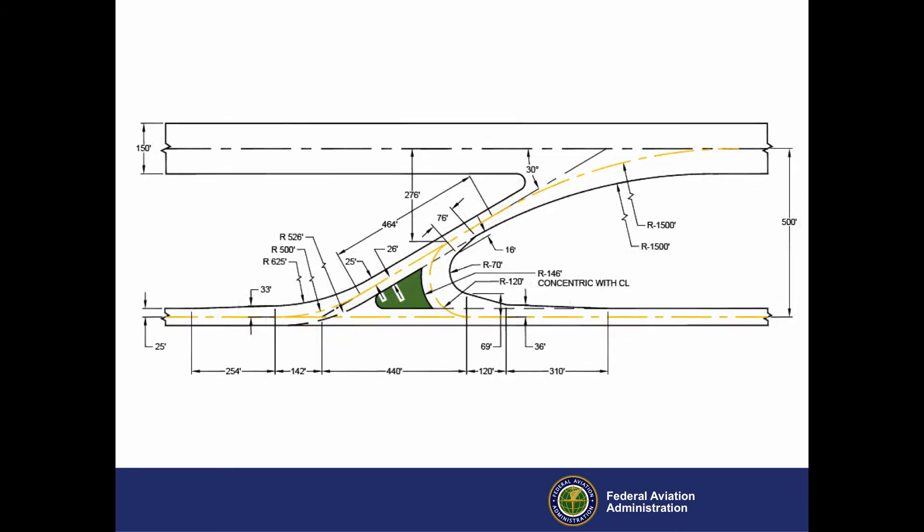Finally, if the airplane design group is ADG-5 and the airport elevation is above 6560 feet, the minimum distance, once again based on airspace requirements, is 500 feet, as shown in this drawing from the FAA website.